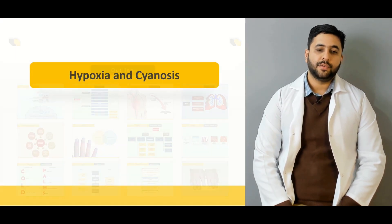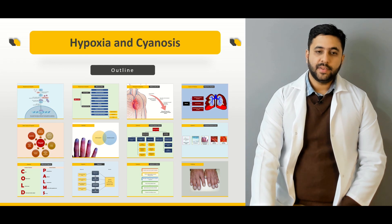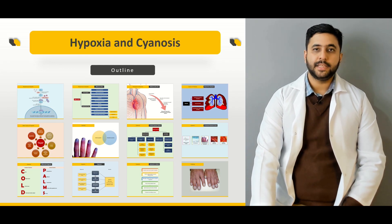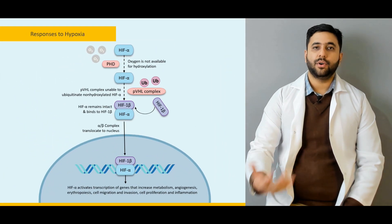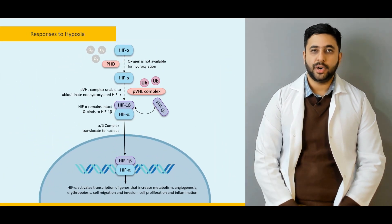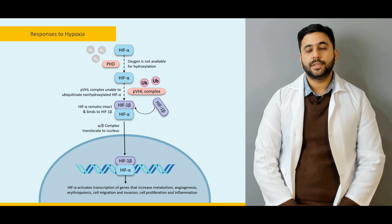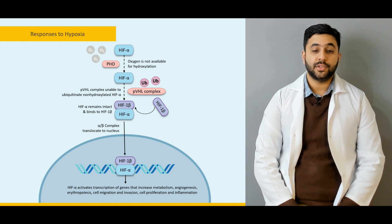Let me give you an outline of how we are going to proceed. We are going to start off by defining what is hypoxia, what are the major players that are important for the adequate oxygenation of the body, what happens in the normal state, why is oxygen so important at the cellular level, and what happens if oxygen is not there for adequate oxygenation.